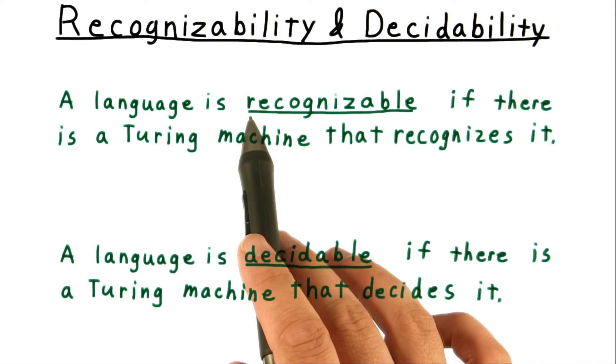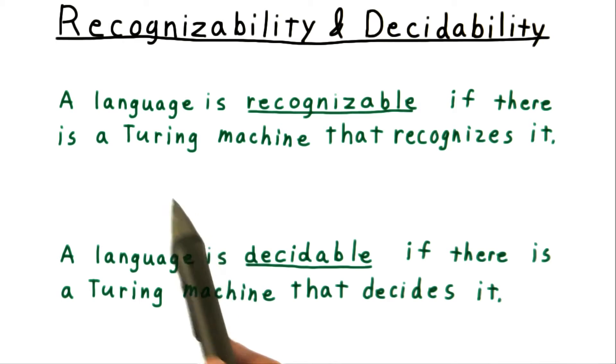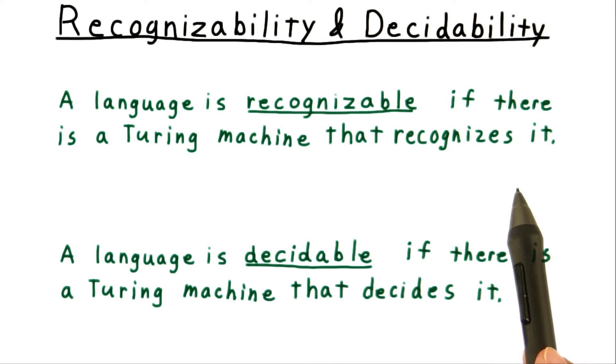Therefore, we say that a language is recognizable if there is a Turing machine that recognizes it. And we say that a language is decidable if there is a Turing machine that decides it.